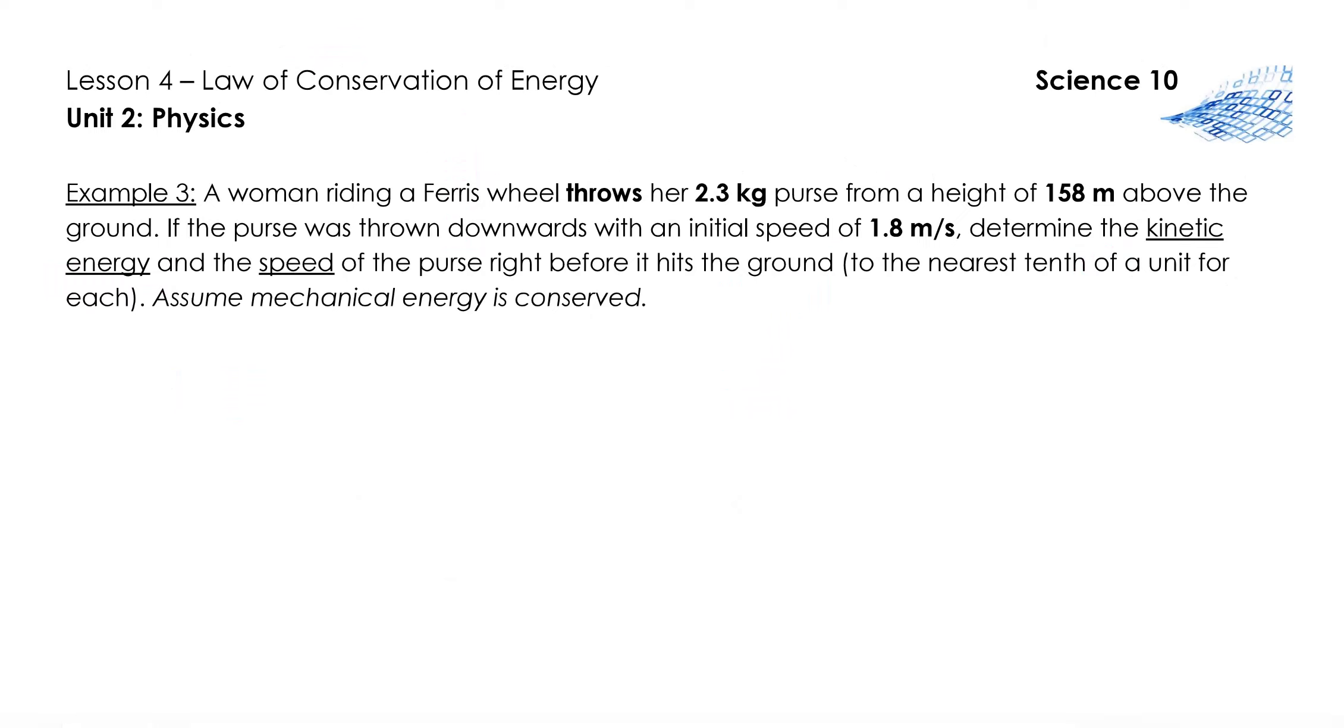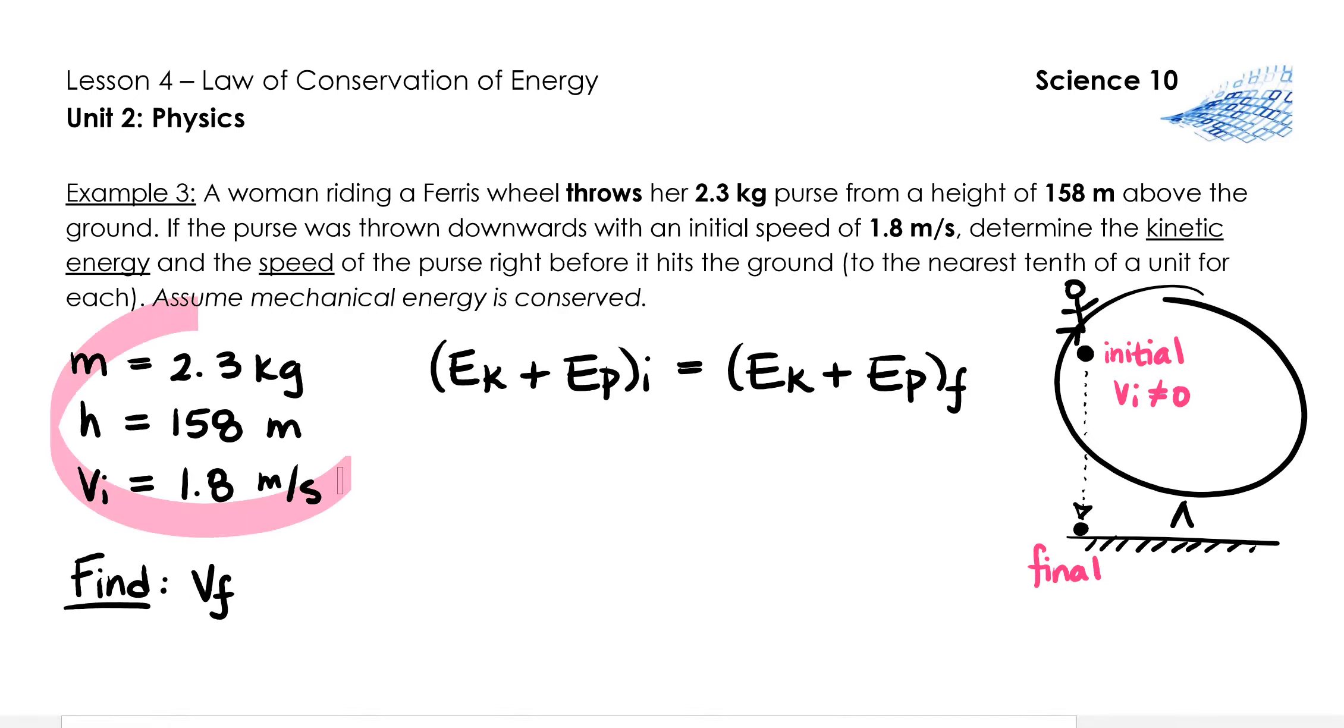Let's do example 3 together. A woman riding a ferris wheel throws her 2.3 kilogram purse from a height of 158 meters above the ground. If the purse was thrown downward with an initial speed of 1.8 meters per second, determine the kinetic energy and speed of the purse right before it hits the ground. Pause the video here while you set up this problem, using the method of listing quantities and writing the correct formula. Okay, I've set up the problem by listing the quantities that I know, identifying what I'm supposed to find, writing the formula that we need to use, and drawing a diagram to help me conceptualize it.